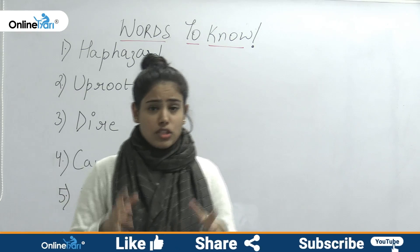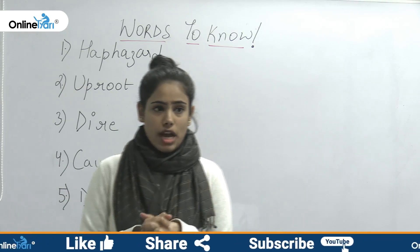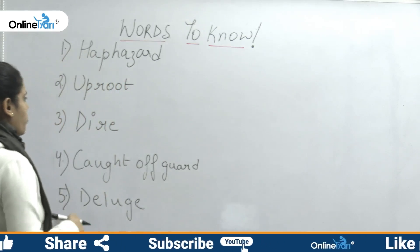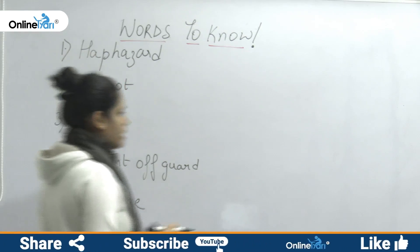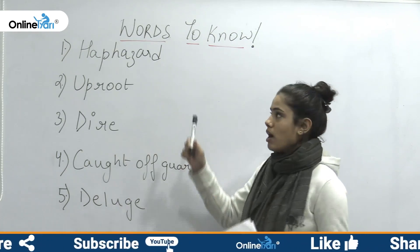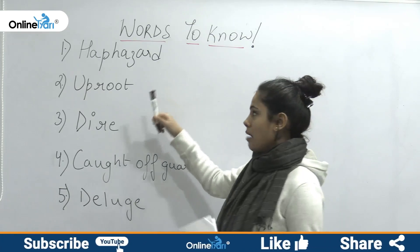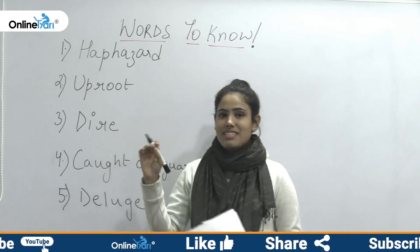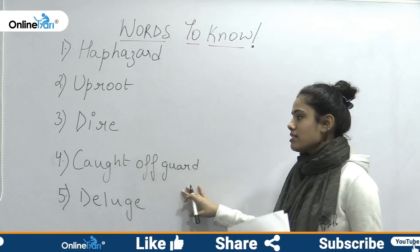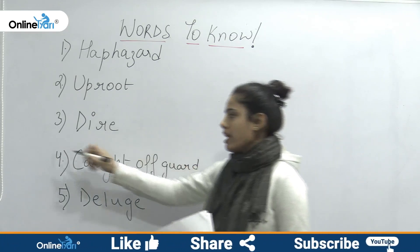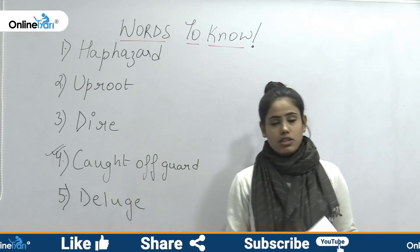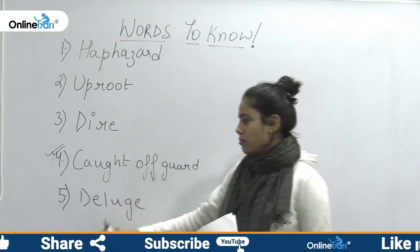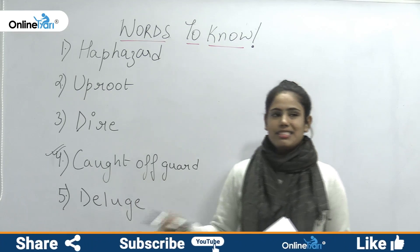Today, 5 words are extracted. You can see them written here. Number 1 is haphazard. Number 2 is uproot. Number 3 is dire. Number 4 is a phrase — it's an idiom — caught off guard. Number 5 is deluged.